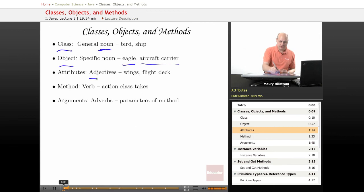Then when it comes to something like a modifier or a descriptor, like an adjective, in Java, they usually call those attributes. And you might say part of the eagle are the wings, or part of the aircraft carrier is the flight deck. So that's part of the object.